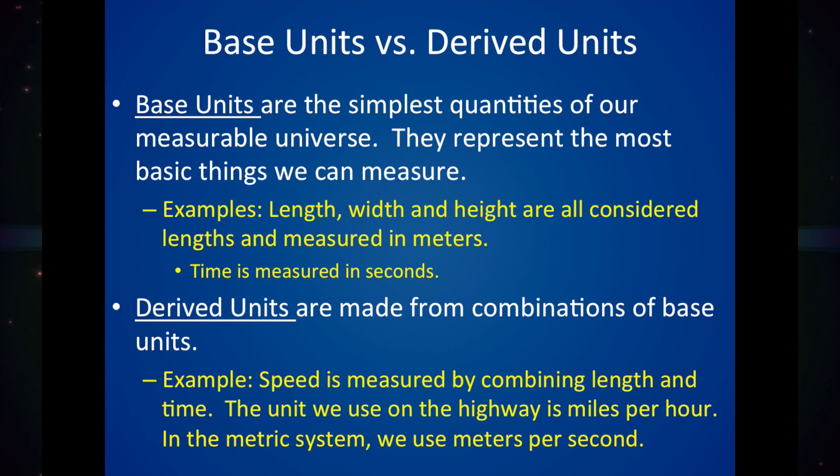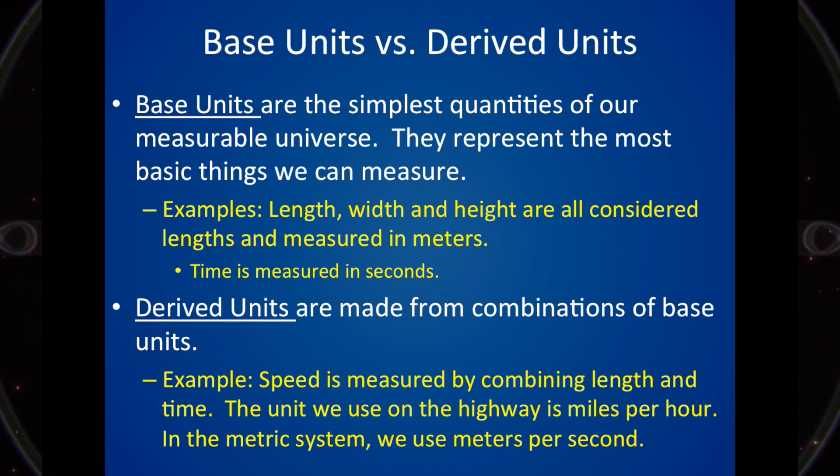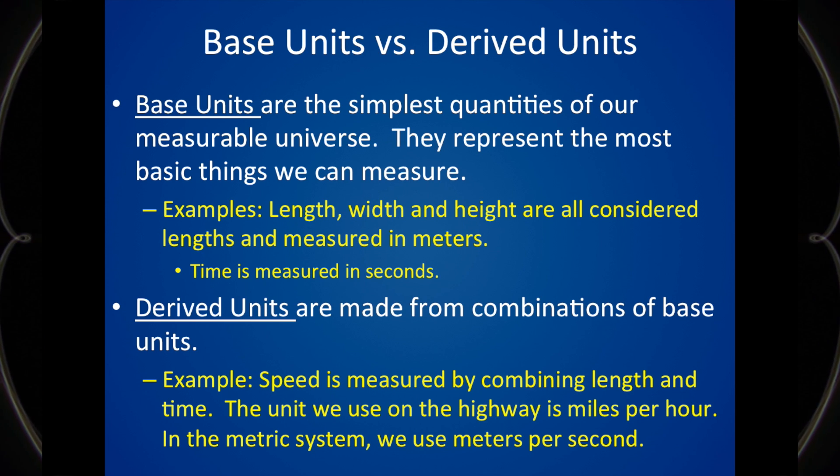Derived units would be units made up or derived of base units. So you'd have speed which is miles per hour, and in physics we always use meters per second.